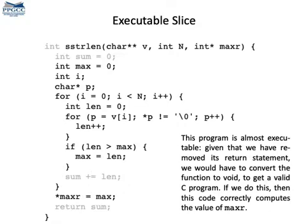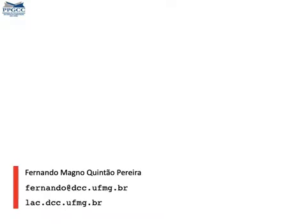Here we have the slice mapped back into source code. As you will be able to verify if you want, this program is compilable, it executes correctly, and it computes the right value of maxR. And with this example, we are done with the definition of program slice. In the next class, we will present some alternative definitions, and after that we shall talk about how to compute these slices.